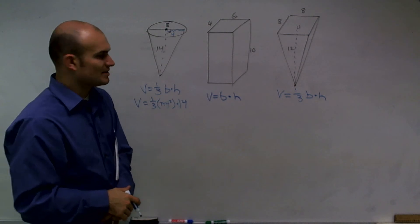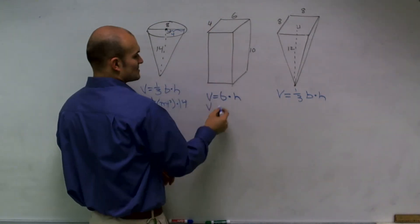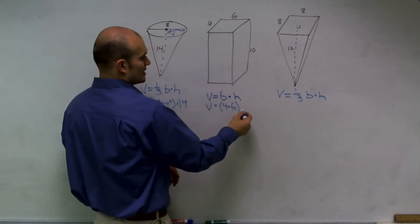Over here, we have our volume equals base times height. So, the area of our base is going to be four times six times our height, which is ten.